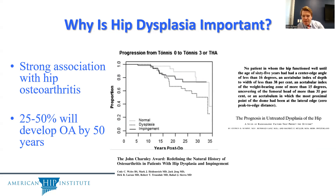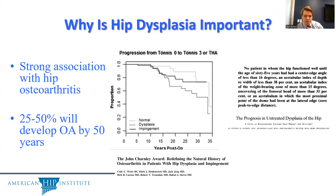In an earlier study by Dr. Gans, they found that no patient with severe hip dysplasia had a well-functioning hip at age 65. This reinforces that patients with radiographic hip dysplasia are at higher risk for hip problems later in life, particularly in their 40s and 50s, which are still considered very active years.